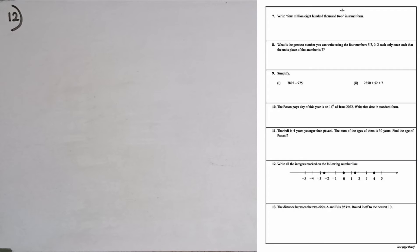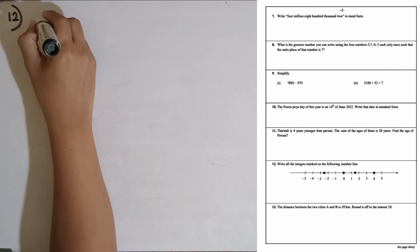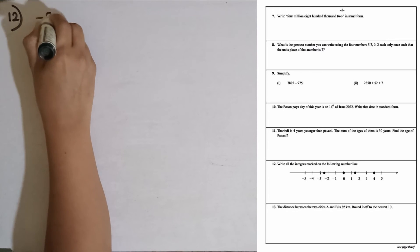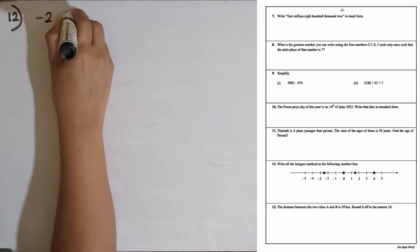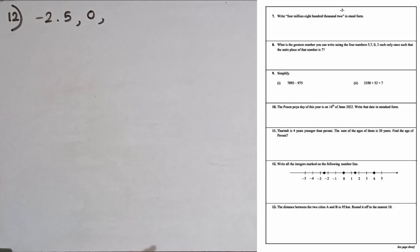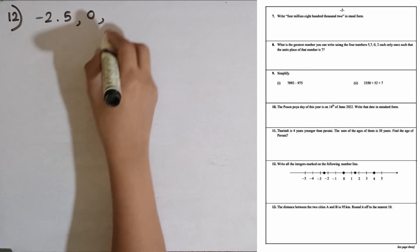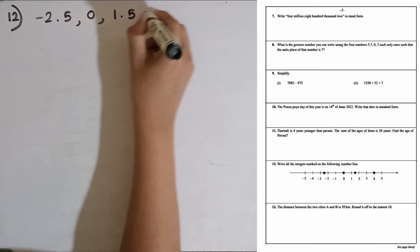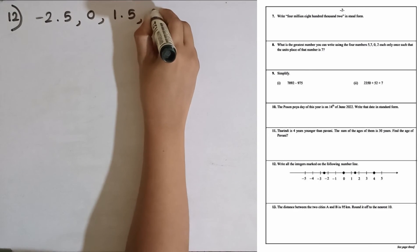Question number twelve: write all the integers marked on the number line. The first one is in between minus 2 and minus 3, so minus 2.5. Then second one is 0. The third one is in between 1 and 2, the middle of 1 and 2, so 1.5. Then the last one is 4.